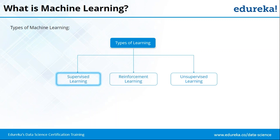In supervised learning, we provide the training dataset to the program. Unsupervised learning, by contrast, means there's no training or testing dataset involved — the program starts making predictions itself. It makes classifications based on clustering and logic, with no contact with the real world. The program knows nothing; it's pure logic.